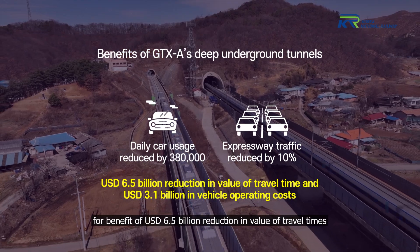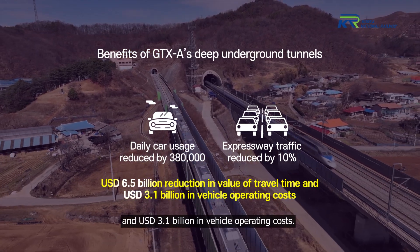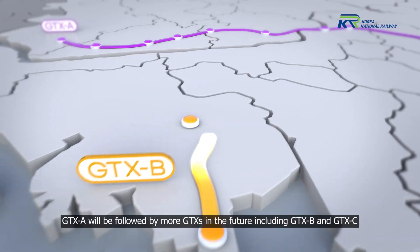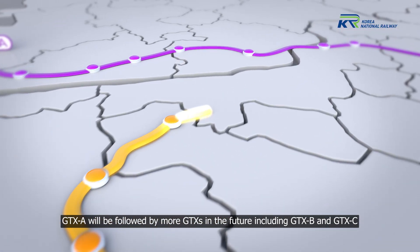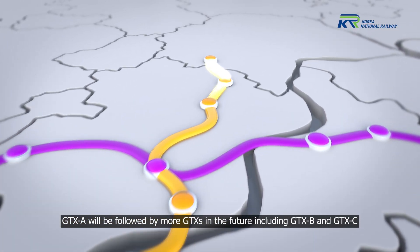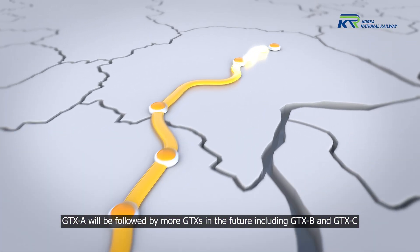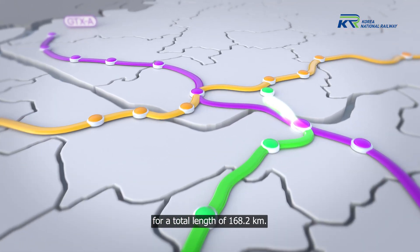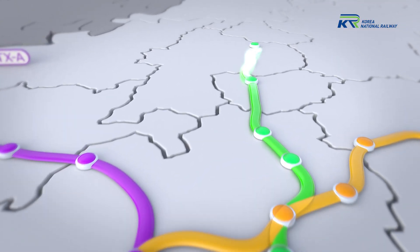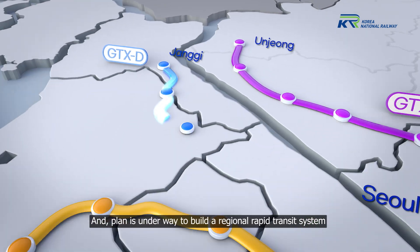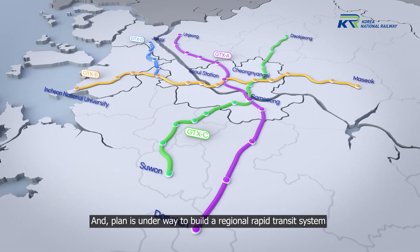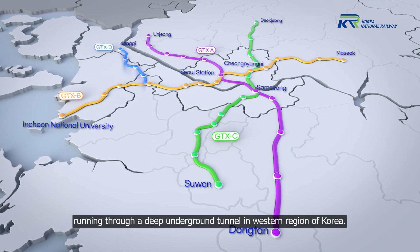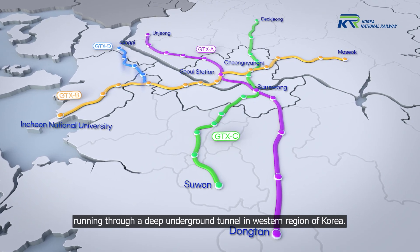GTX-A will deliver 3.1 billion US dollars in vehicle operating cost savings, and will be followed by more GTX lines — including GTX-B and GTX-C — for a total length of 168.2 kilometers. A plan is also underway to build a regional rapid transit system running through a deep underground tunnel in the western region of Korea.